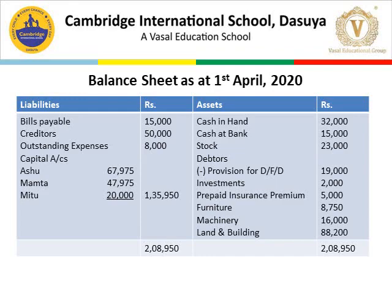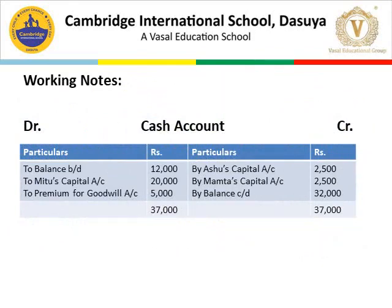To arrive at the figure of cash in hand, we prepare a cash account in the working notes. Cash is an asset, so its opening balance is on the debit side: balance brought down from the balance sheet 12,000. Meetu as new partner brought capital 20,000 and premium for goodwill 5,000 — total 37,000. On the credit side, Ashu and Mamata withdrew their share of goodwill premium — 2,500 each. The balance remaining with the firm is 32,000, which is written in the balance sheet as cash in hand.